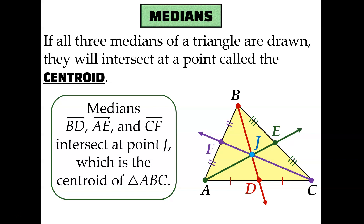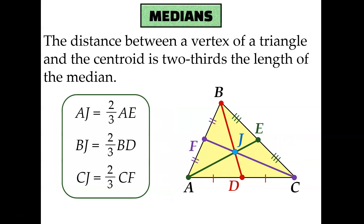There are a couple of interesting things we know about the centroid. One is that the distance from a vertex of the triangle to the centroid is two-thirds the length of the entire median. For example, if the distance from A to E is three units, then the distance from A to J is two-thirds of that, or two units. Another way to say it: the distance from the centroid to the midpoint of that side is one-third the length of the entire median. So if AE is three, then AJ is two and JE is one.